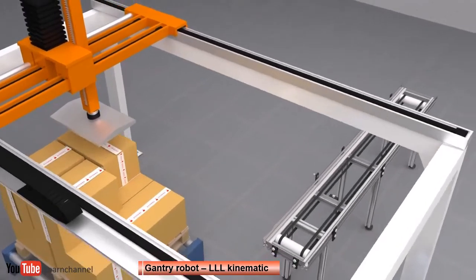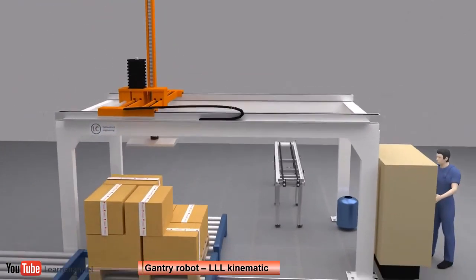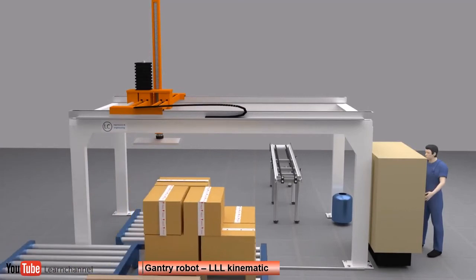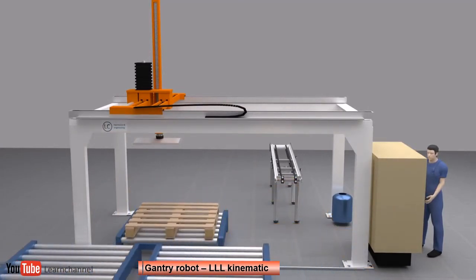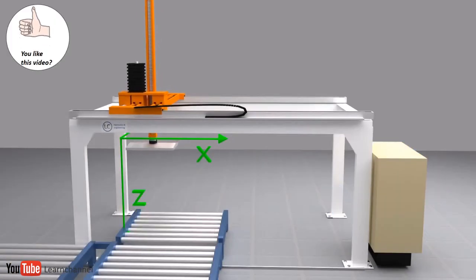Gantry robots are easier to program with respect to motion because they work with an XYZ coordinate system. The workspace has the shape of a rectangle.